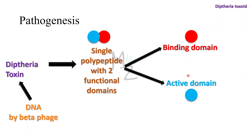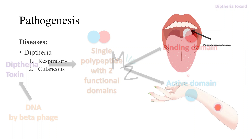During the lysogenic phase of viral growth, the DNA of this virus integrates into the bacterial chromosome and the toxin is synthesized. Corynebacterium diphtheriae cells that are not lysogenized by this phage do not produce exotoxin and are non-pathogenic.